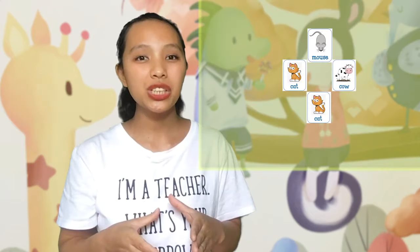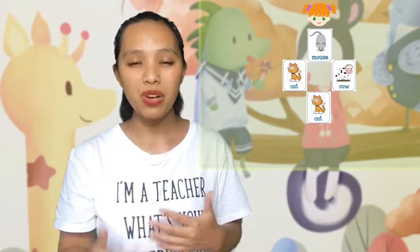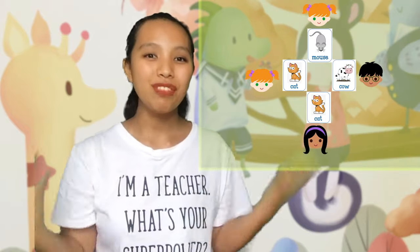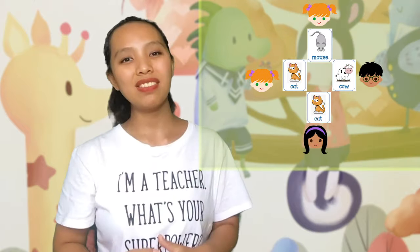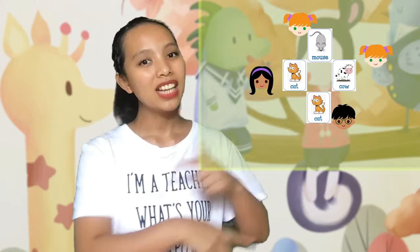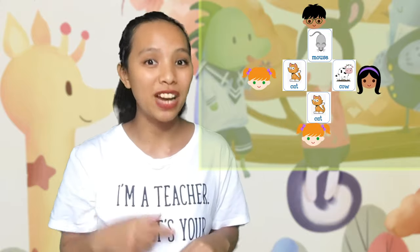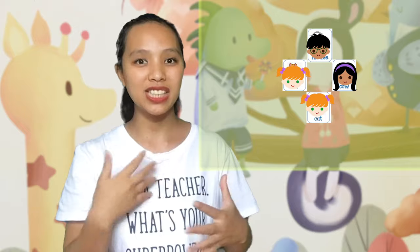Game 3 — Musical Flashcards: Gather the flashcards in a circle, making sure you have at least one per student. Play fun and lively music and have the students dance around the circle in one direction. When the music stops, the students pick up a flashcard, hold it up in the air, and say the word.